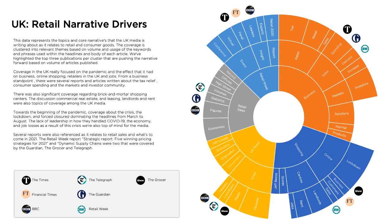UK media talks a lot about just business in general — not very helpful, I could have guessed that. But if you go to the next level within the business topic, you can see rates, sales, market solutions, and products. Going one layer further, you see tax relief, sales, spending, and delivery. So now you can understand that as it relates to business and retail, the UK media are talking about tax relief, interest rates, sales, open markets, and investors.